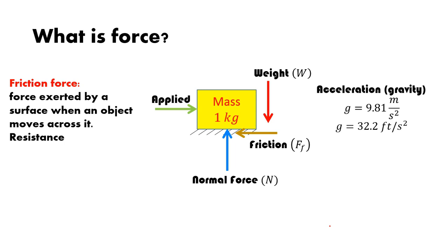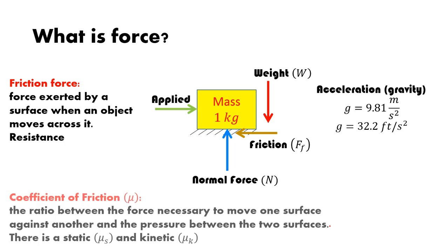Friction can change depending on the surface. Moving a bookcase across carpet versus tile involves the same weight, the same normal force, and you applying the same force — but the friction differs. This introduces another variable called the coefficient of friction: the ratio between the force necessary to move one surface against another and the pressure between the two surfaces. It describes the condition of the two surfaces interacting together.